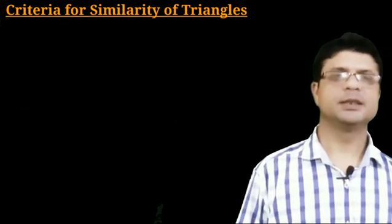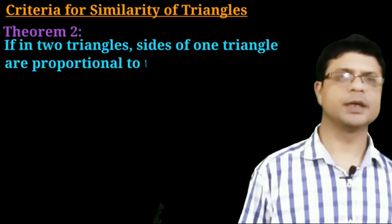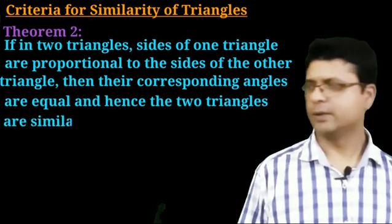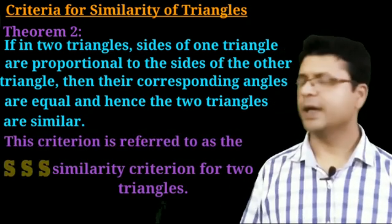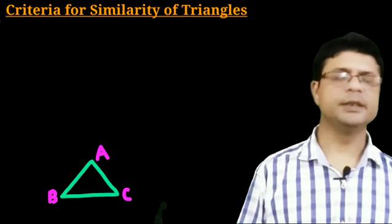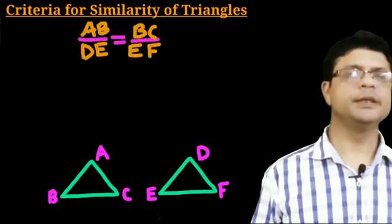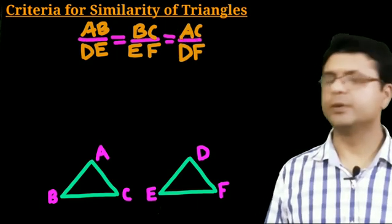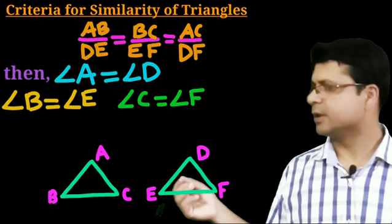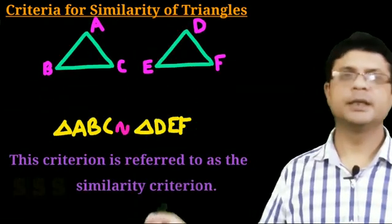Now let us discuss the second theorem: if in two triangles, sides of one triangle are proportional to the sides of the other triangle, then the corresponding angles are equal and hence the two triangles are similar. This criteria is known as SSS or side-side-side criteria. In triangle ABC and triangle DEF, if AB/DE = BC/EF = AC/DF, then angle A equals angle D, angle B equals angle E, and angle C equals angle F. Both conditions are satisfied, so the triangles are similar by SSS criteria.